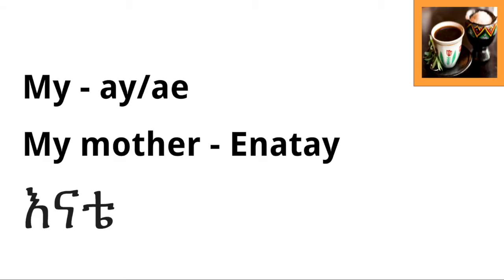You've actually seen this before if you watched my previous video on family members. There was a sentence using 'my mother.' In English that's two words, but in Amharic you say 'enate.' So 'enat' means mother, but adding the '-a' ending changes it to 'enate,' meaning my mother. If you're just talking about a mother you say 'enat,' but for my mother you say 'enate.'